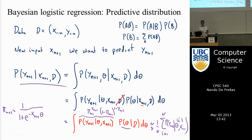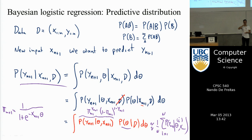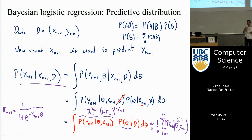The flow is: take training data, simulate the theta_i's from the posterior, generate capital-N theta_i's, freeze them, and for prediction use those N theta_i's. For any new x_{n+1}, use the stored thetas to generate a prediction. There is a variant called particle filters that handles the case where thetas change over time, but I won't cover that today.